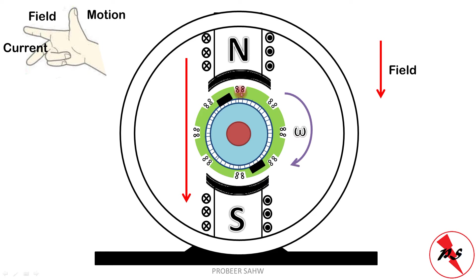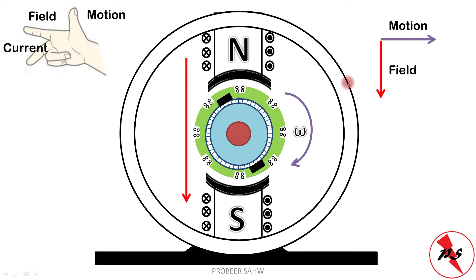Since the armature is rotating clockwise, the instantaneous direction of motion of the armature conductors near the north pole is toward the right. By Fleming's right-hand rule, with the magnetic field directed downwards and motion toward the right, the direction of the induced current in this armature winding will be going into the screen.